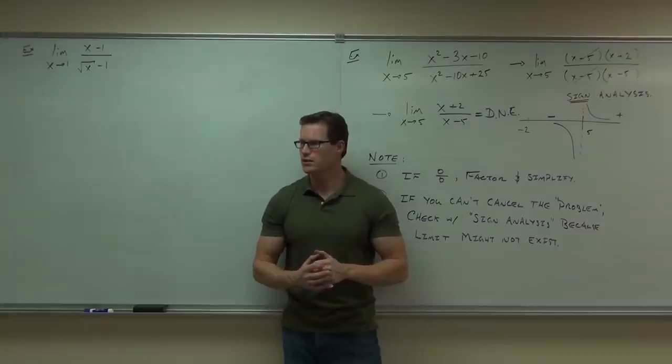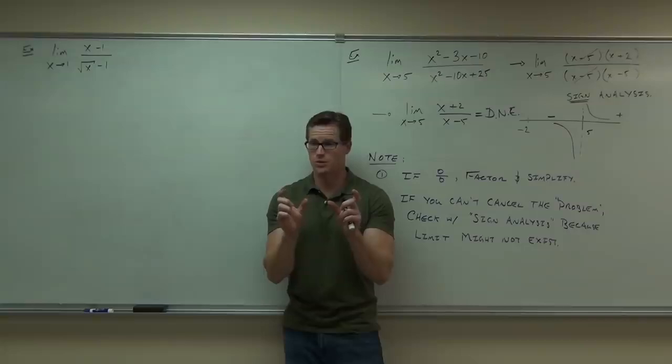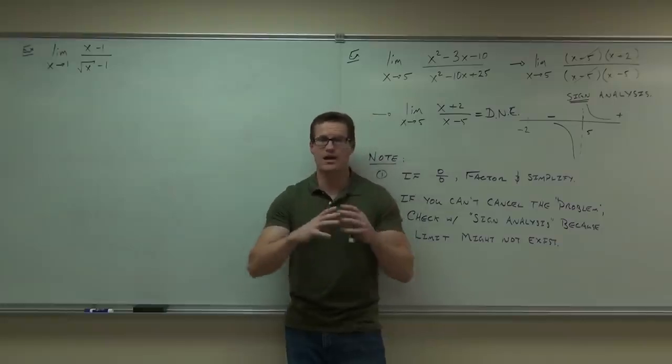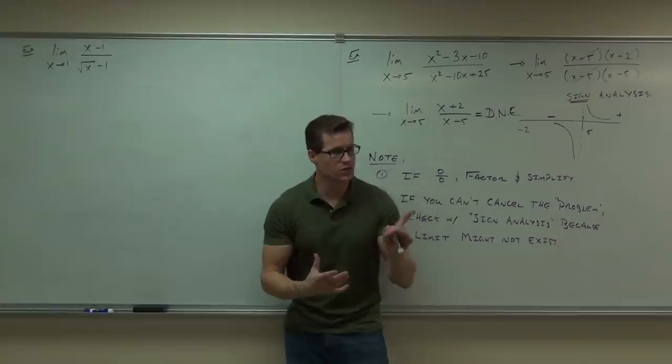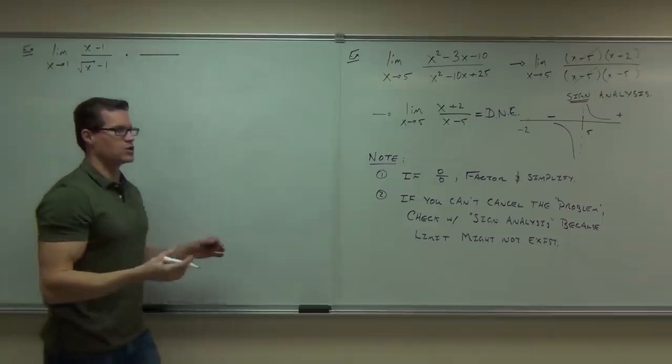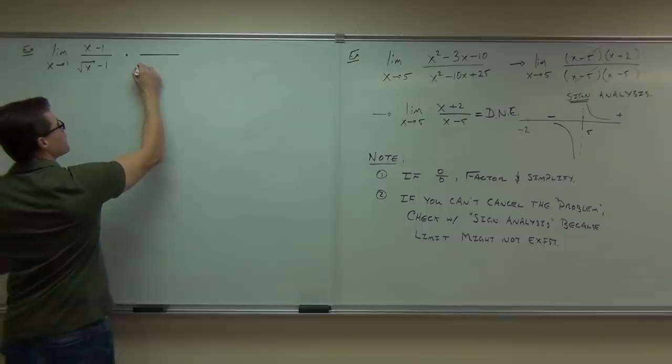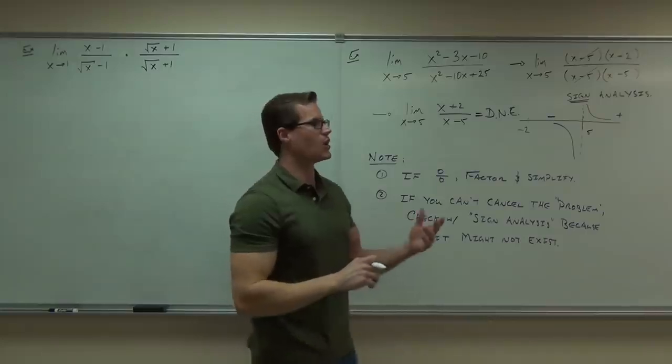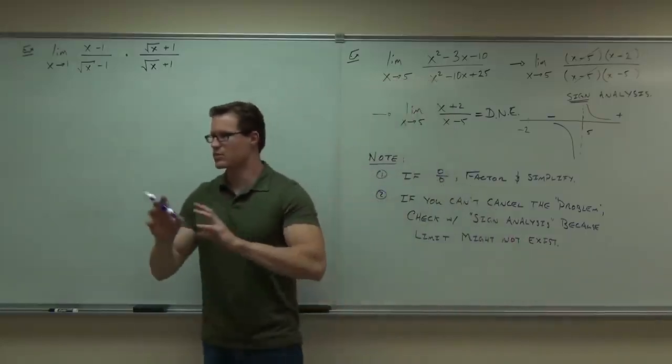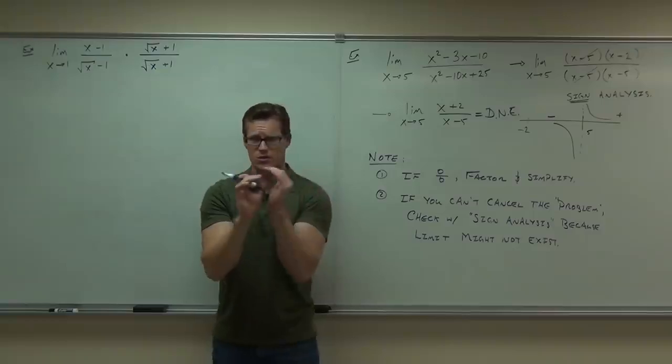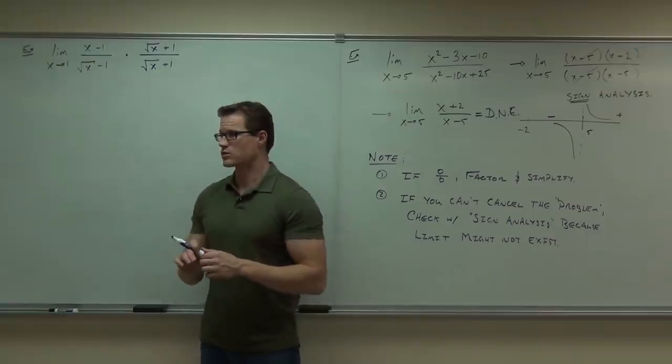Have you ever heard of the conjugate? The conjugate is those two terms with a different sign in the middle. If we do that, that's one way you learn in your intermediate algebra course on how to rationalize a denominator or rationalize a numerator or basically just rationalize out a square root. So if we do that, that might help us. So don't forget the algebra that you know. Sometimes we can rationalize. If we do, we'll rationalize square root of x minus 1. Oops, sorry, plus 1 over square root of x plus 1. You have to use the conjugate though.